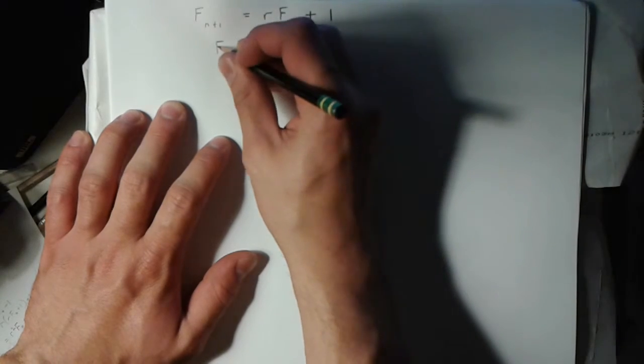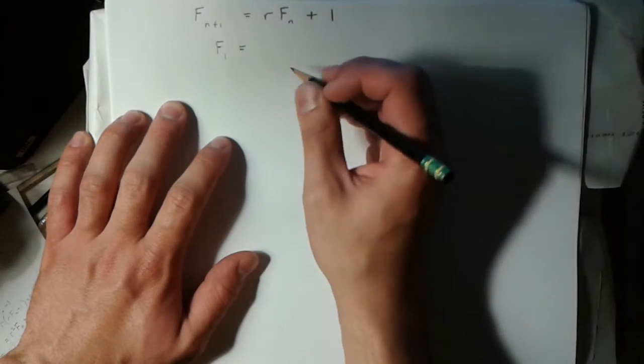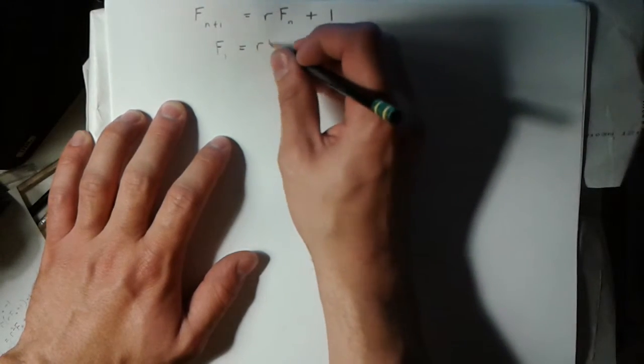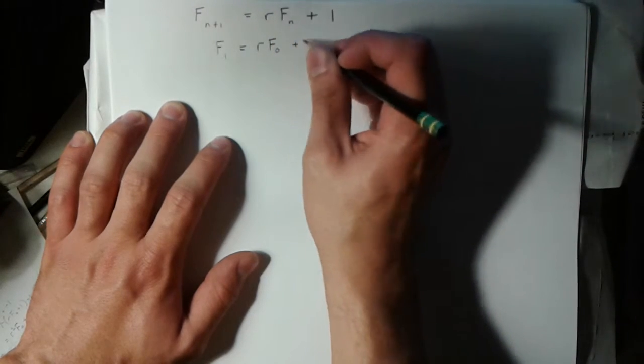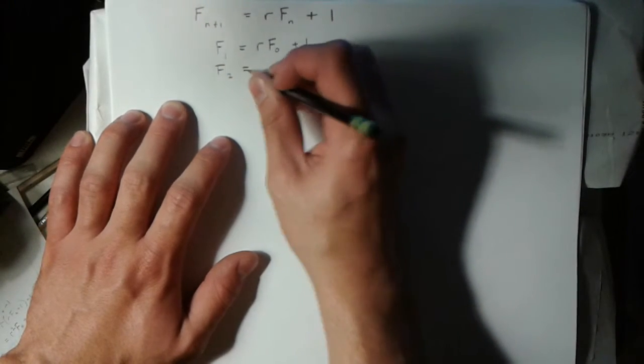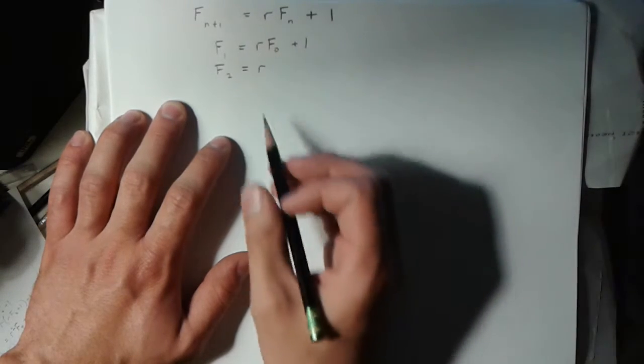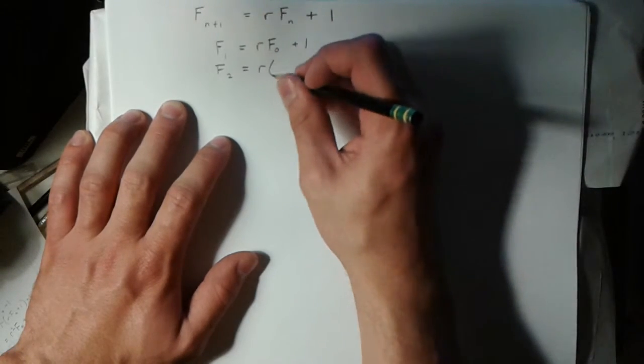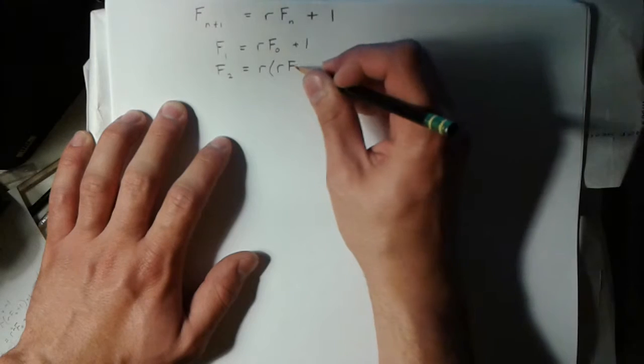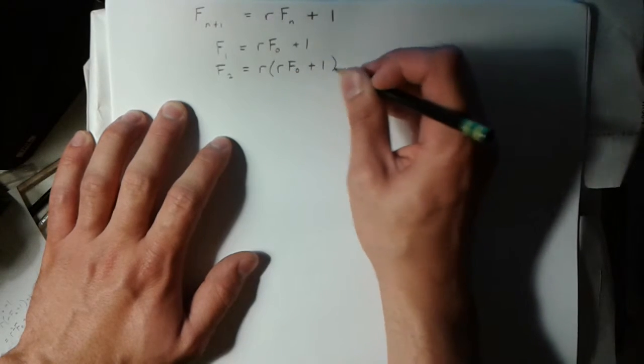So if we look at the first term here, this is just r times the zeroth term plus 1. And then the next term, this is just going to be r times the previous term plus 1. So I'm just going to sub in the previous term here and then add 1.